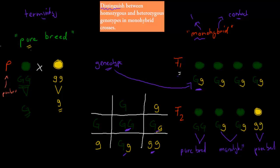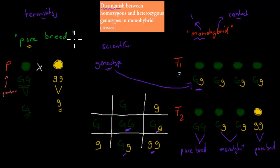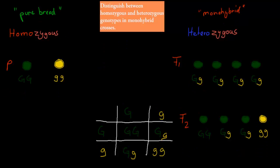But now I'm going to show you the scientific terminology. The terms 'pure breed' and 'monohybrid' were often used by Mendel himself, but since then we've gotten new terminology. The words we use now are actually homozygous and heterozygous, which are the terms given in your dot point.